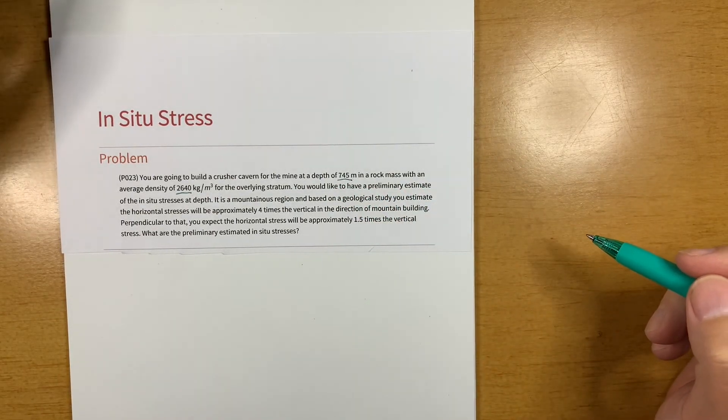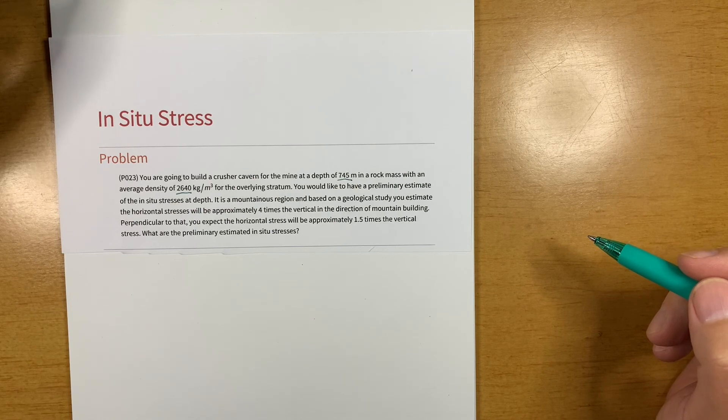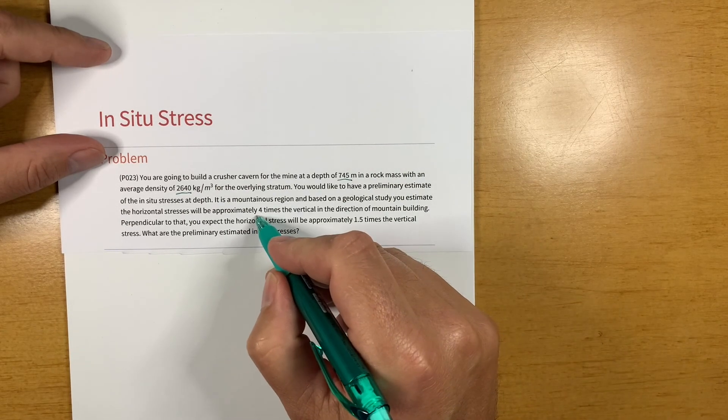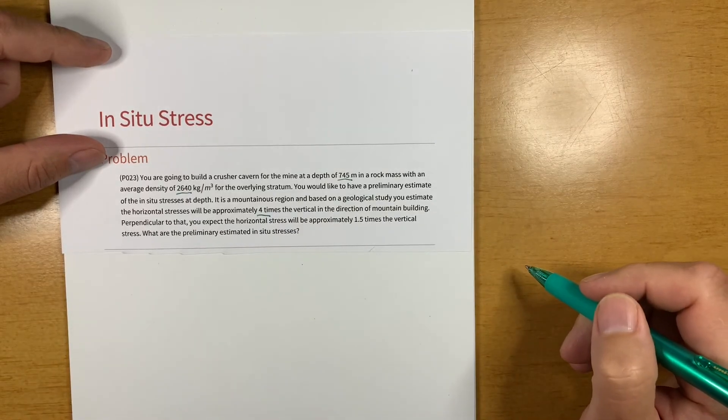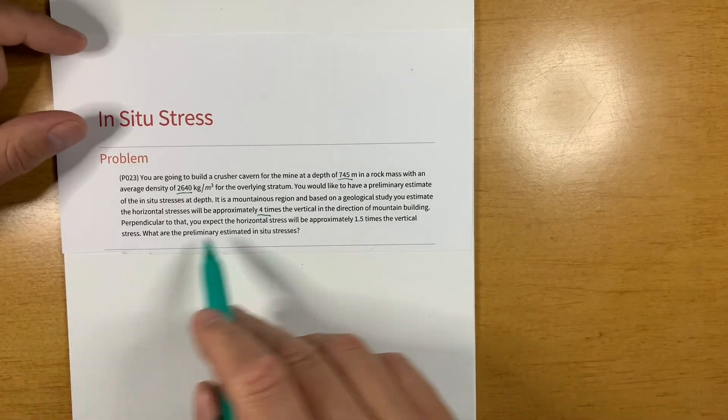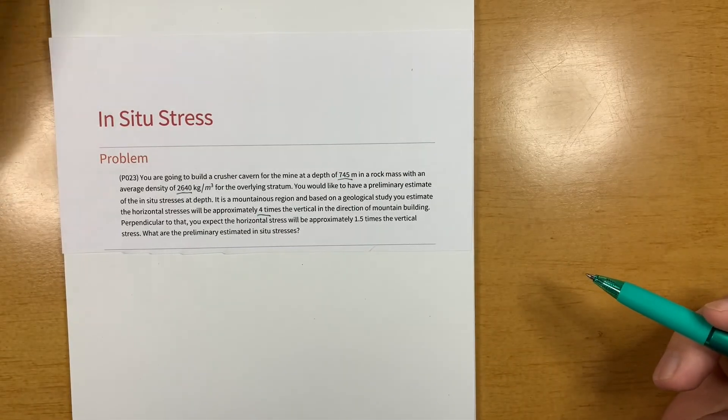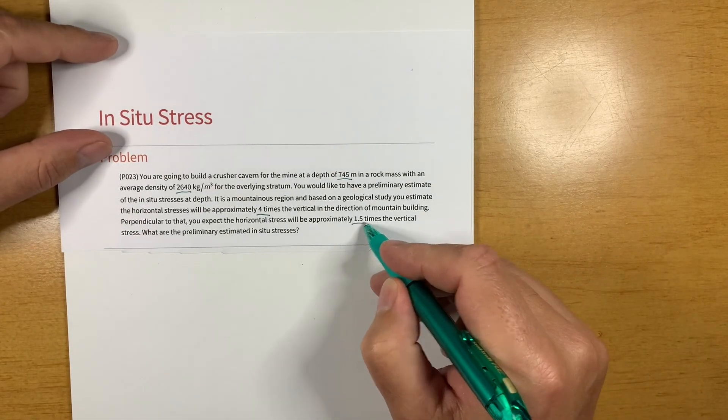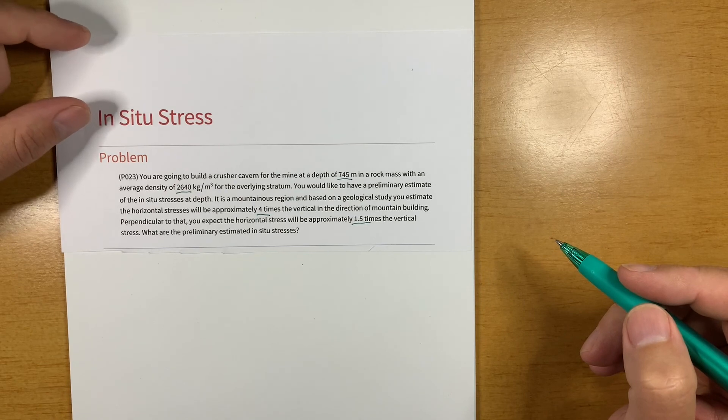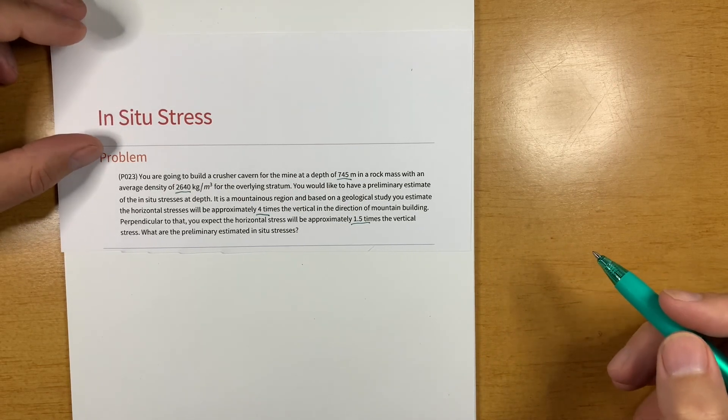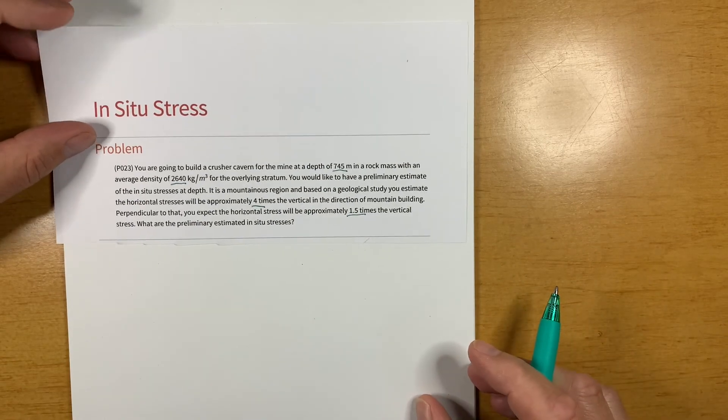It's a mountainous region and based on a geological study you estimate the horizontal stresses will be approximately four times the vertical in the direction of mountain building. And perpendicular to that direction you expect the horizontal stresses will be less and they'll only be 1.5 times the vertical stress. So what are the preliminary estimated in situ stresses at depth?